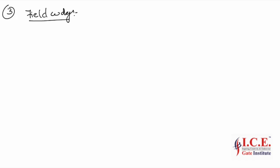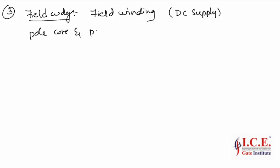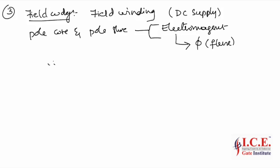A large amount of flux is therefore produced from the pole into the air gap. The third important part in the construction is the field winding. The purpose of the field winding is to carry the field current whenever it is excited with a DC supply, so that the pole core and pole shoe behave as an electromagnet, producing flux. The amount of flux in the air gap is directly proportional to the field current.